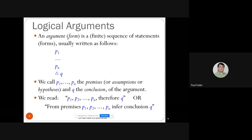A logical argument or argument form is a finite sequence of statements written as follows: p1 up to pn are true formulas, therefore q must be true. We call the facts p1 to pn premises, assumptions, or hypotheses, and q is the conclusion. We read it as: if p1 to pn are true, therefore q must be true, or from premises p1 to pn we can infer conclusion q.